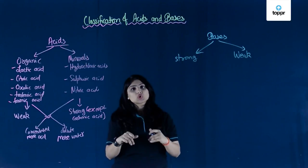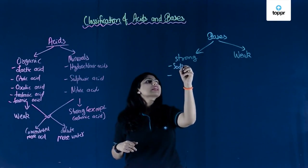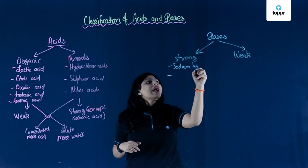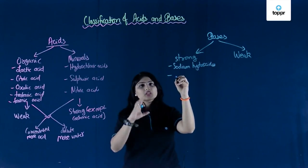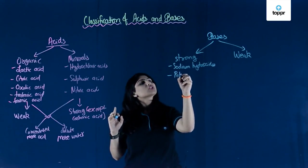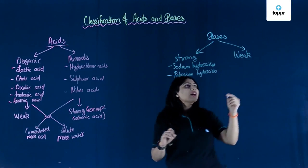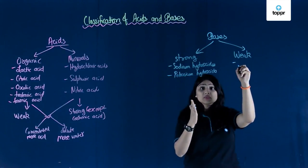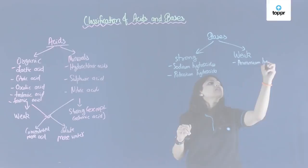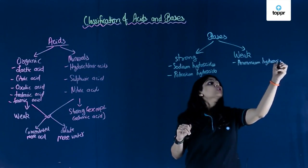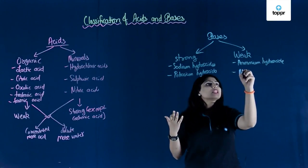In strong bases, we have sodium hydroxide. These strong bases are usually not used for domestic purposes — instead, they are used in industries. We also have potassium hydroxide as another strong base. In weak bases, we have ammonium hydroxide, which is used in making toothpaste, and magnesium hydroxide, which is used to make antacids.